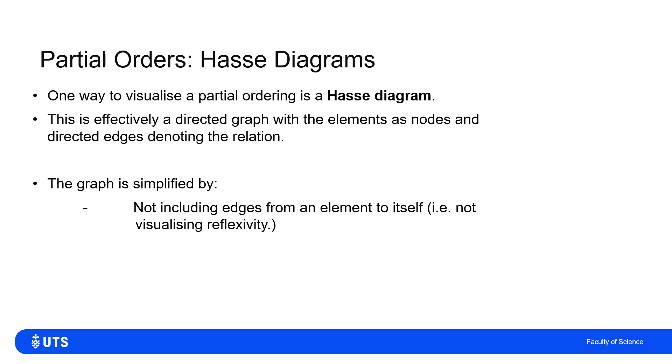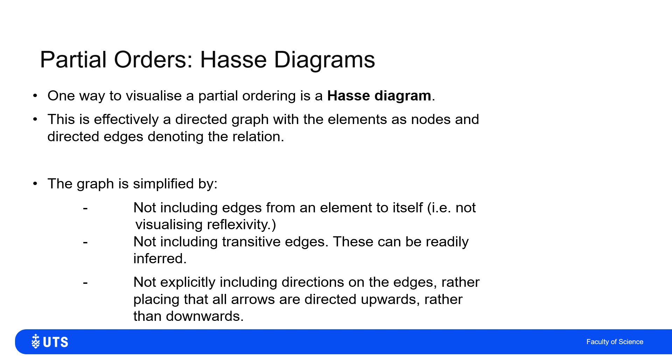So what we do is we don't bother to include any edges from an element to itself. Now, if it's a partial order, we do have reflexivity, but there is really no point in drawing all of these loops from each element to itself. So let's keep that simple. We don't need to draw transitivity because that can be inferred, as you will see when we've got the diagrams.